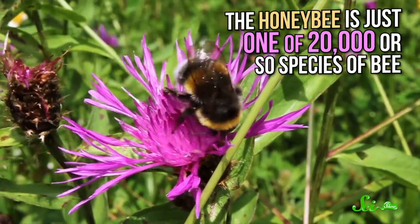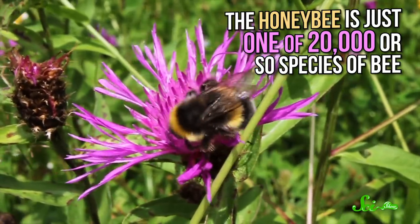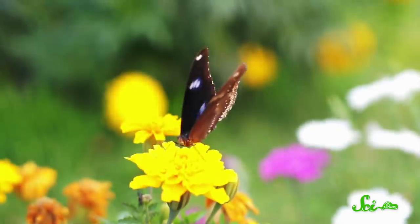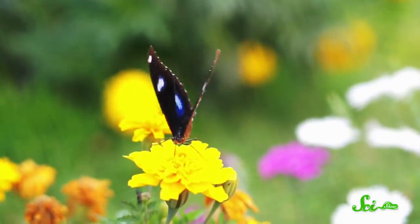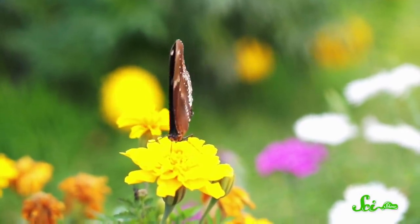The honeybee is just one of 20,000 or so species of bee, and bees aren't the only pollinators, either. In fact, there are close to 200,000 different species worldwide that act as pollinators, which include butterflies, flies, moths, beetles, birds, and even mammals, like bats.